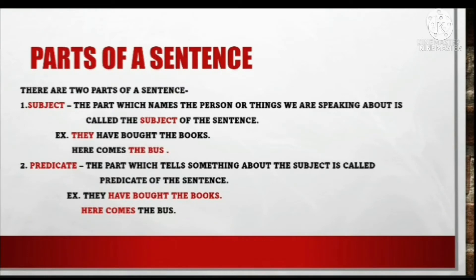Ab hum dekhte hain parts of a sentence — ek waakya ke kitne bhaag hote hain. Basically, ek waakya ke do bhaag hote hain. There are two parts of a sentence. First one is subject and second one is predicate.